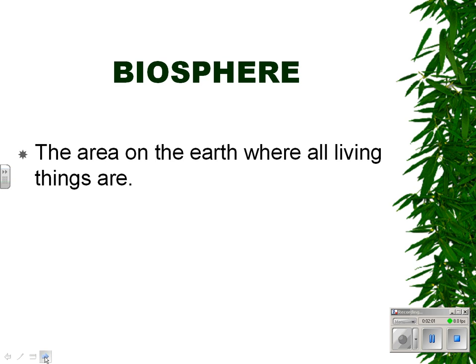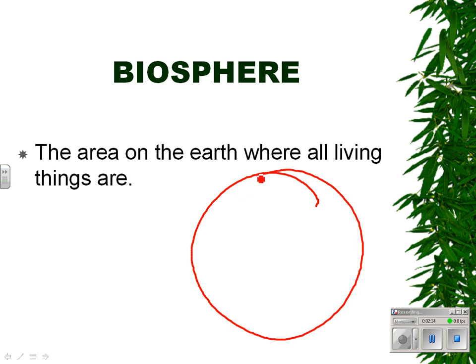By defining some terms. The first term is biosphere. The biosphere is the area on earth where all living things are. Let me demonstrate to you what the biosphere actually is. That circle I just drew is the earth, and what we've done is cut the earth in half — what we call a cross-section. Here's the core.